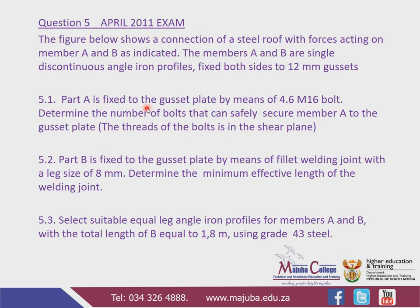We're going to start with question 5.1. Part A is fixed to the gusset plate by means of four-comma-six M16 bolts. We are required to determine the number of bolts that can safely secure member A to the gusset plate. The threads of the bolts are in the shear plane. The grade of the bolt is 4.6 and the size of the bolt is M16, referring to member A with the force of 88 kilonewtons.